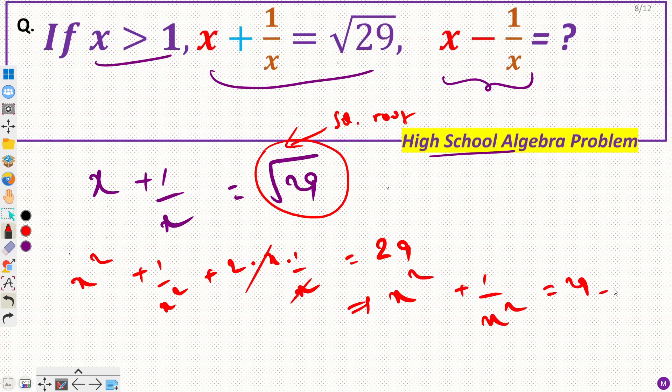Now from here you want to reach x minus 1 by x. So we are given x square plus 1 by x square as 27 and we want to reach x minus 1 by x. Now how can we reduce the power? So basically we will have to make this a perfect square.